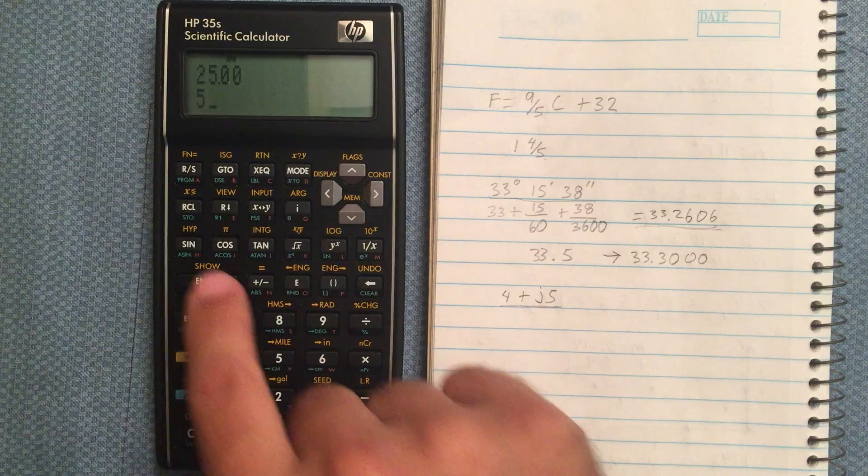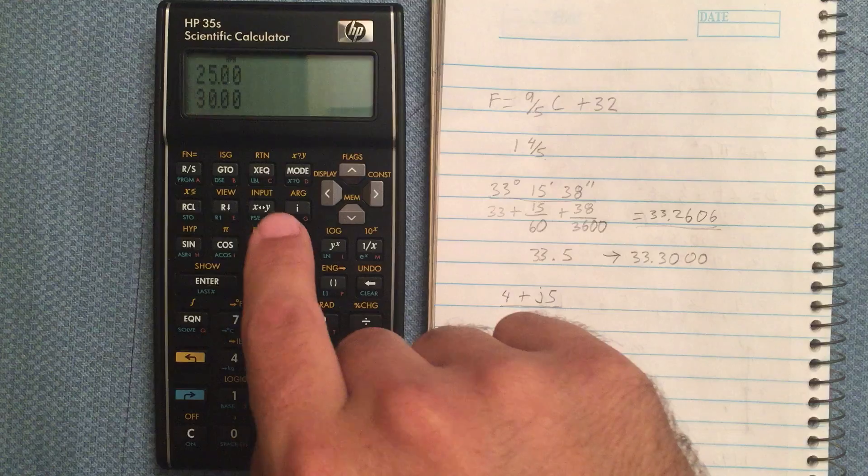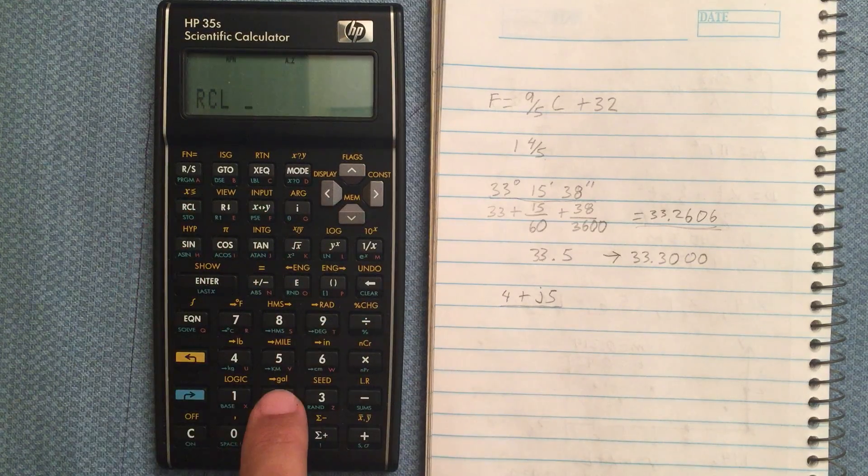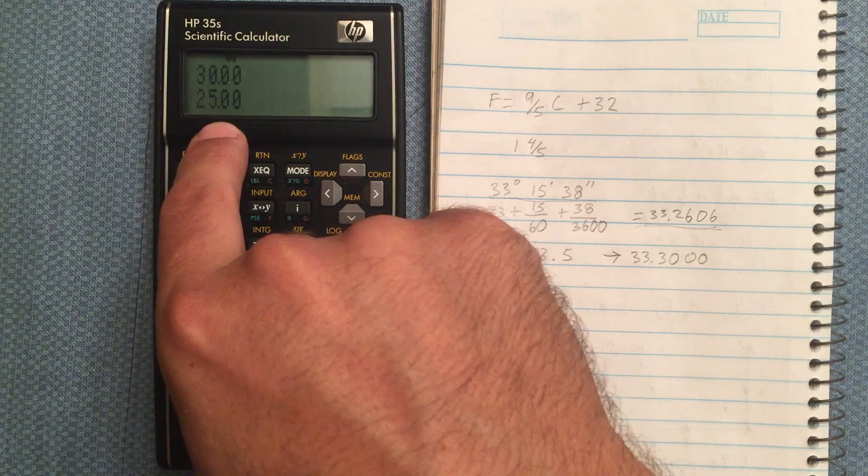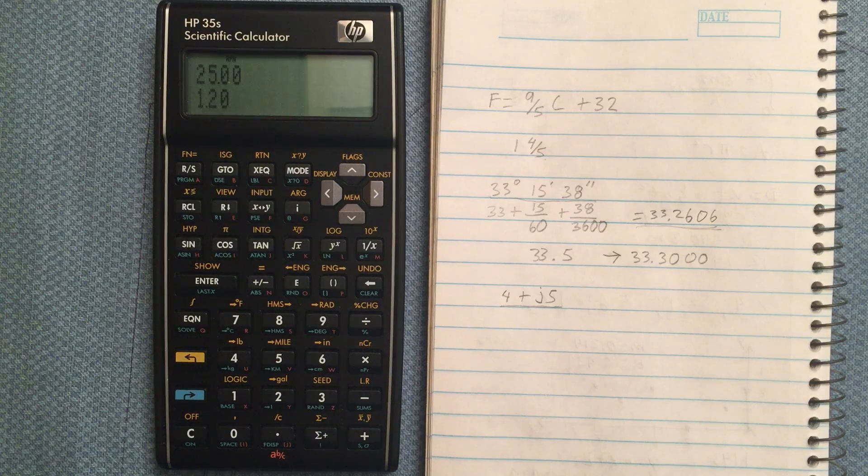So enter 5, do 6, multiply those, and then I want to bring back my stored value. So I do recall y, and it recalls the 25 that I had before. Then I get my final answer.